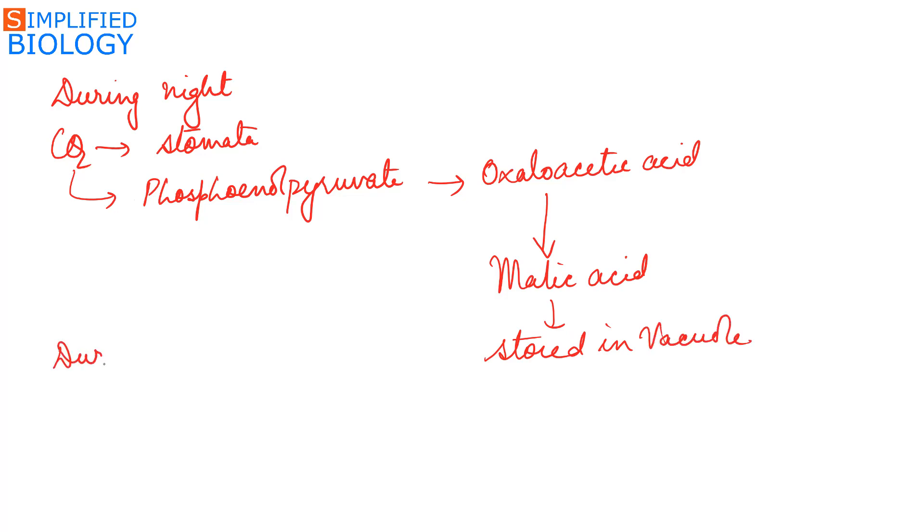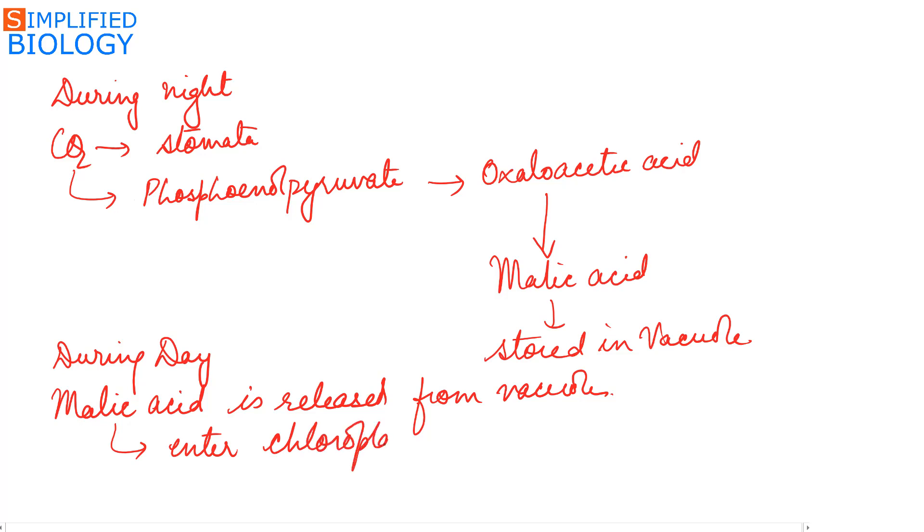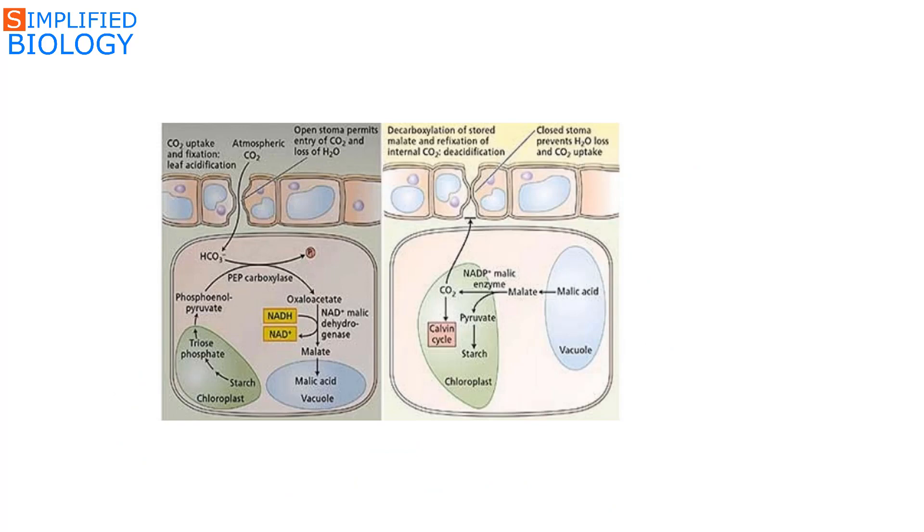During day, the malic acid is released from the vacuoles and enters the chloroplast where carbon dioxide is released from the malic acid, which then enters the Calvin cycle where sugar is formed. Now let's see the process in the diagram.